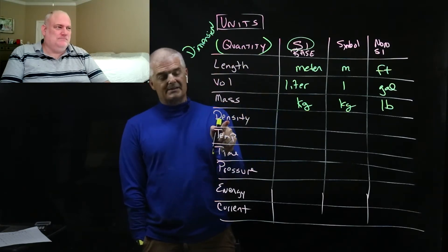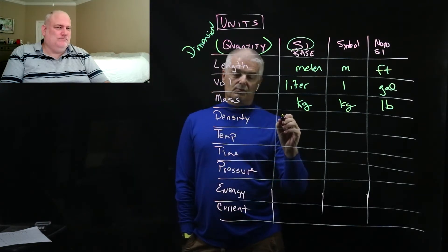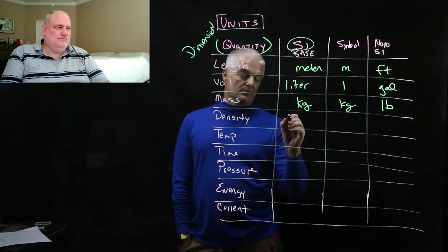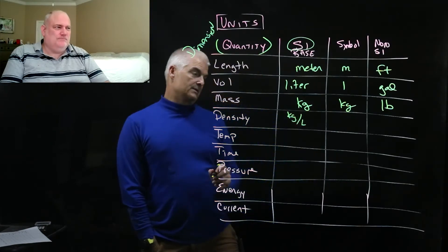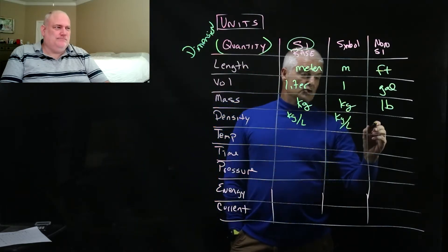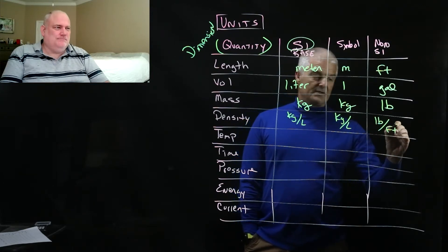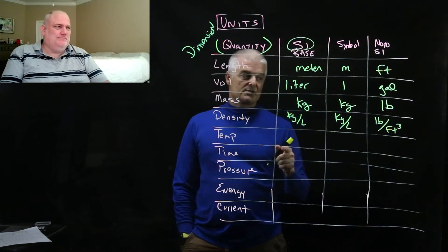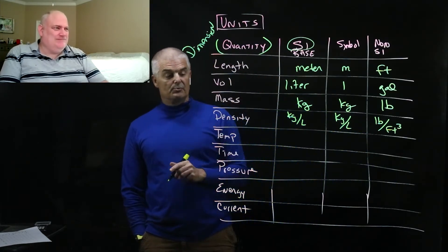Density is a weird one because it combines two dimensions. And so this would be kilograms per liter, right? I guess that's the unit, kilograms per liter. But you could also say pounds, here'd be a weird one, per cubic foot.